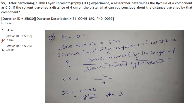After a thin layer chromatography experiment, the RF value of a component is 0.5 and the solvent travelled 4 cm. Using the formula RF = distance travelled by compound / distance travelled by solvent, the distance travelled by the compound is 2 cm. Answer is option 3.